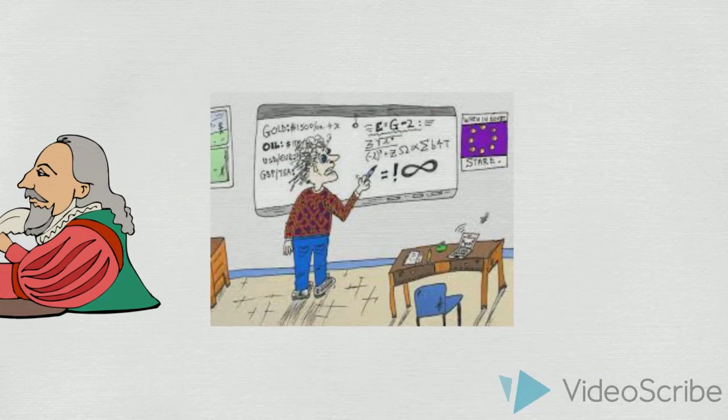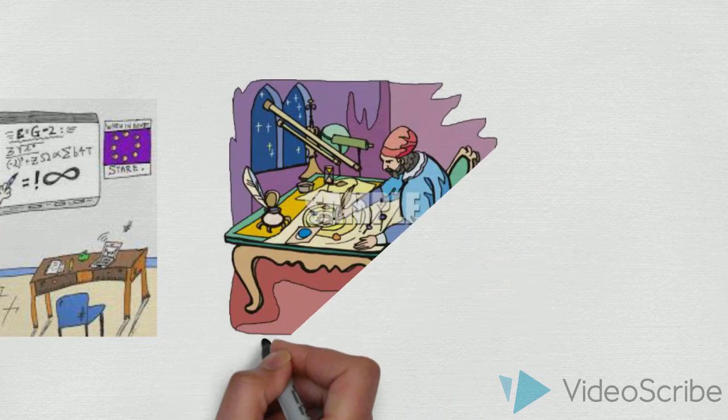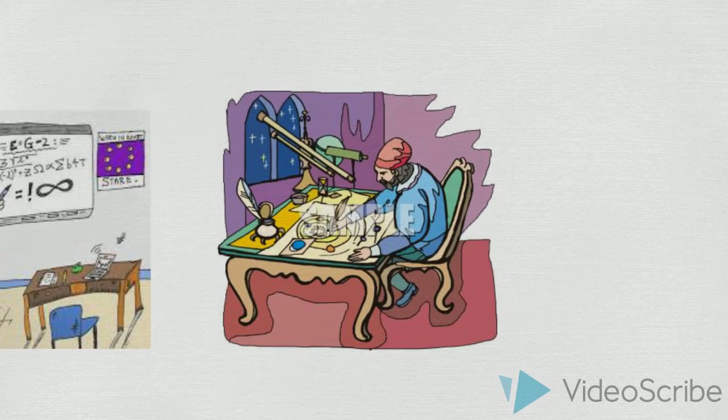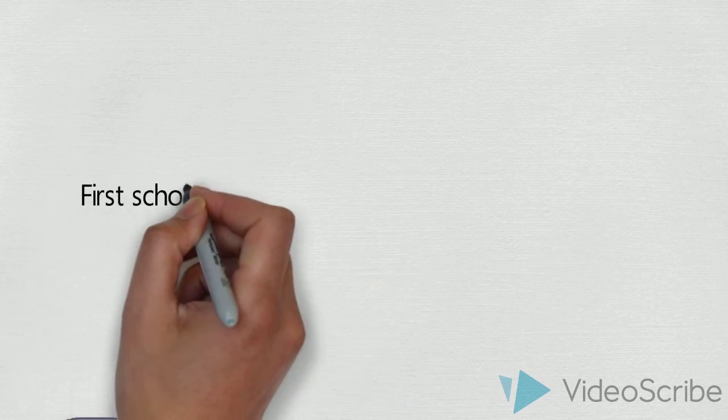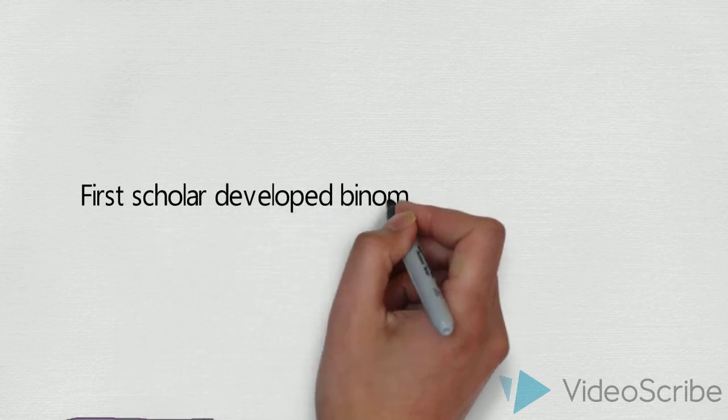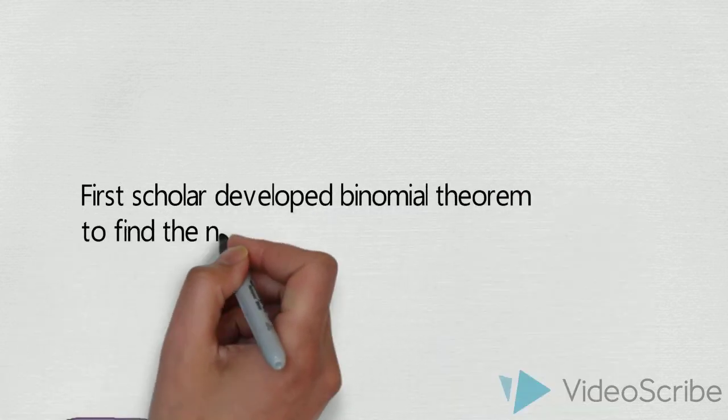a mathematician, and an astronomer. He was the first scholar to develop the binomial theorem to find the nth roots and obtain binomial coefficients.